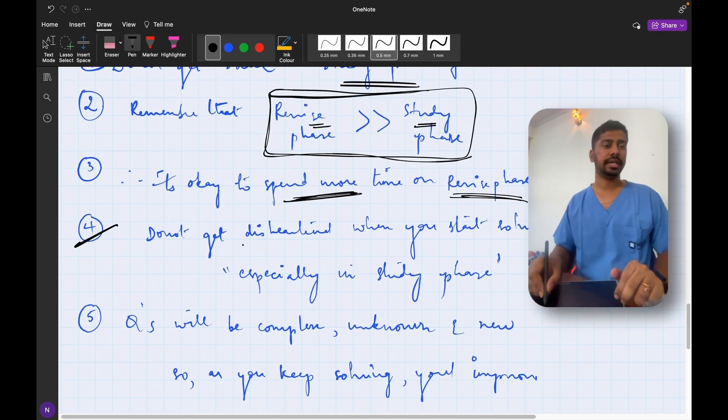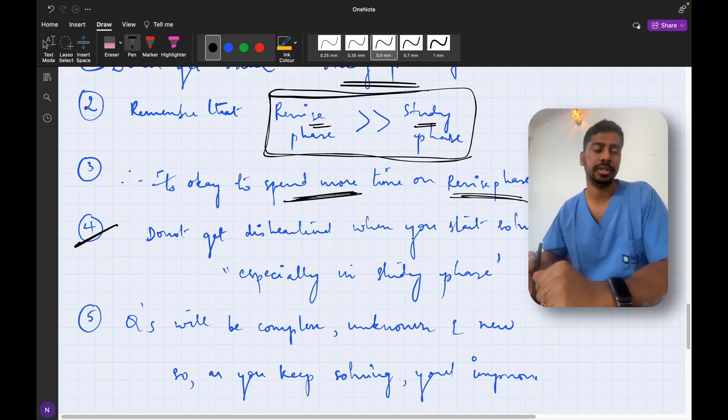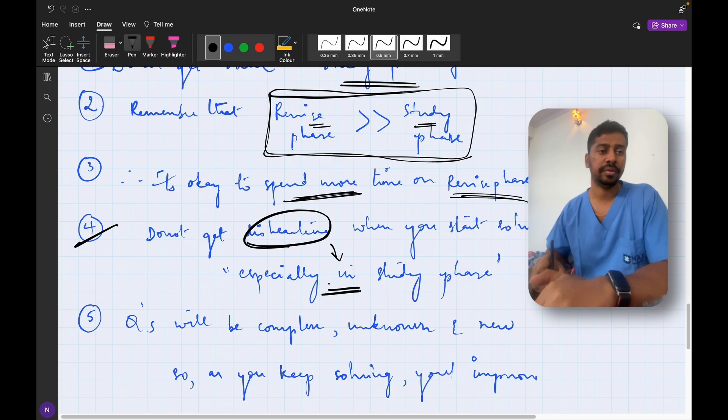Another thing is do not get disheartened when you start solving the questions. Usually what we will think is we are reading the chapter from Crack the Core book and then we are doing the MCQs immediately from the respected resources. We will think that we should be getting most of the questions right because we just studied the chapter. But it is not the case. Most of these MCQs are going to be complex and require deeper understanding and practice. Therefore initially when you start solving you will get lot of questions wrong but do not get disheartened by it, especially in the study phase.